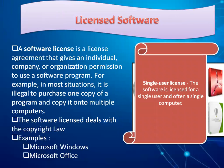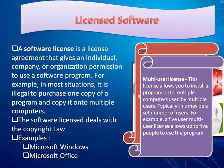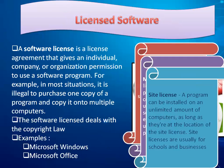There are different types of software licenses. A single user license means the software is licensed for a single user and often a single computer. A multi-user license allows installation on multiple computers for multiple users — for example, a five-user license allows up to five people to use the program. A site license allows a program to be installed on an unlimited number of computers at a specific location, and is usually for schools and businesses.